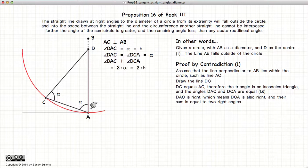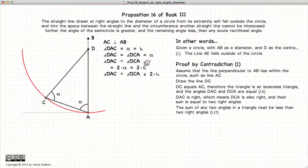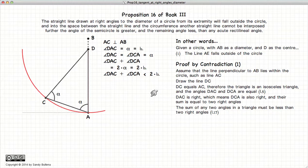Now the angle at A is a right angle, so consequently the angle at C is also a right angle. If we sum these two angles together, they are equal to two right angles, or 180 degrees. But according to Proposition 17 of Book 1, the sum of any two angles in a triangle has to be less than two right angles. So the sum of these two must be less than two right angles. But we've already said that it was two right angles — it cannot be equal to two right angles and less than two right angles simultaneously, and hence there is our contradiction.